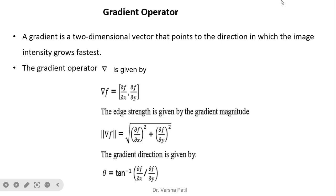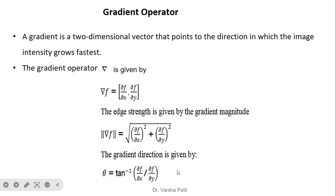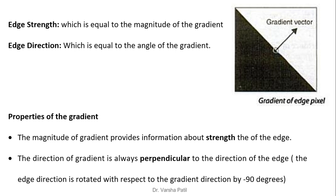For the gradient operator, we take the difference between adjacent values. A gradient is a two-dimensional vector pointing in the direction in which image intensity grows fastest. The gradient operator is given by ∂f/∂x and ∂f/∂y, since our image is two-dimensional. The edge strength is the gradient magnitude: sqrt((∂f/∂x)² + (∂f/∂y)²). The edge direction is arctan(∂f/∂x / ∂f/∂y). The magnitude of the gradient gives edge strength, and the gradient direction is always perpendicular to the edge direction.